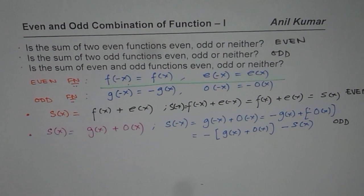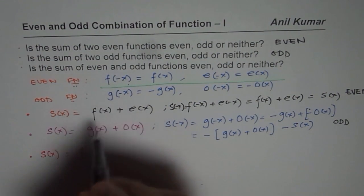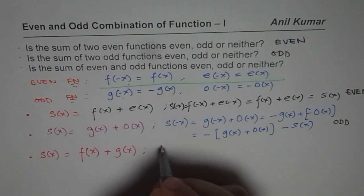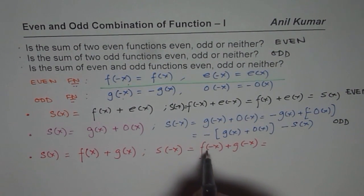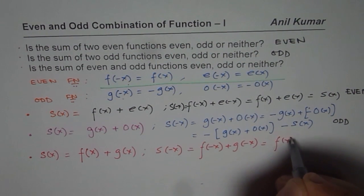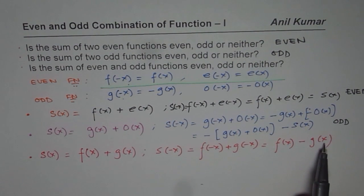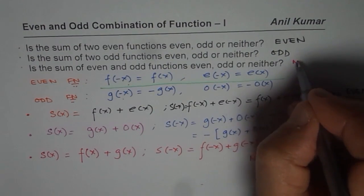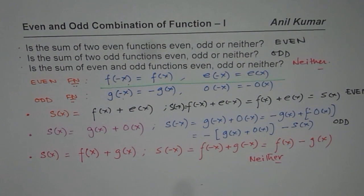Now let us check the third combination: one even and one odd function. Let s(x) = f(x) + g(x), where g(x) is odd. We evaluate s(-x) = f(-x) + g(-x) = f(x) + (-g(x)) = f(x) - g(x). This is neither f(x)+g(x) nor the negative of that. Therefore, in this case, the result is neither even nor odd. So an even and odd combination gives a function that is neither.